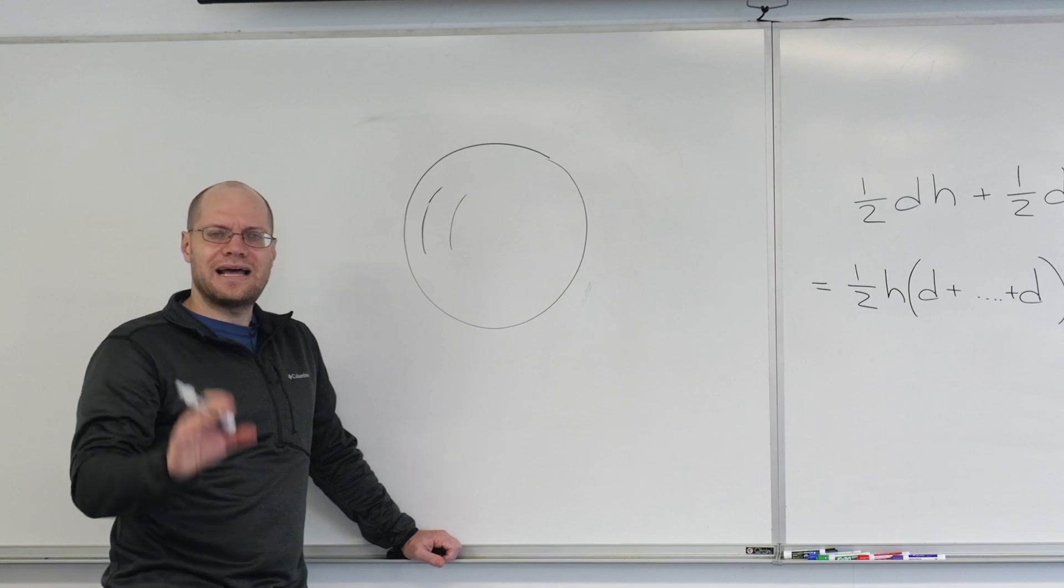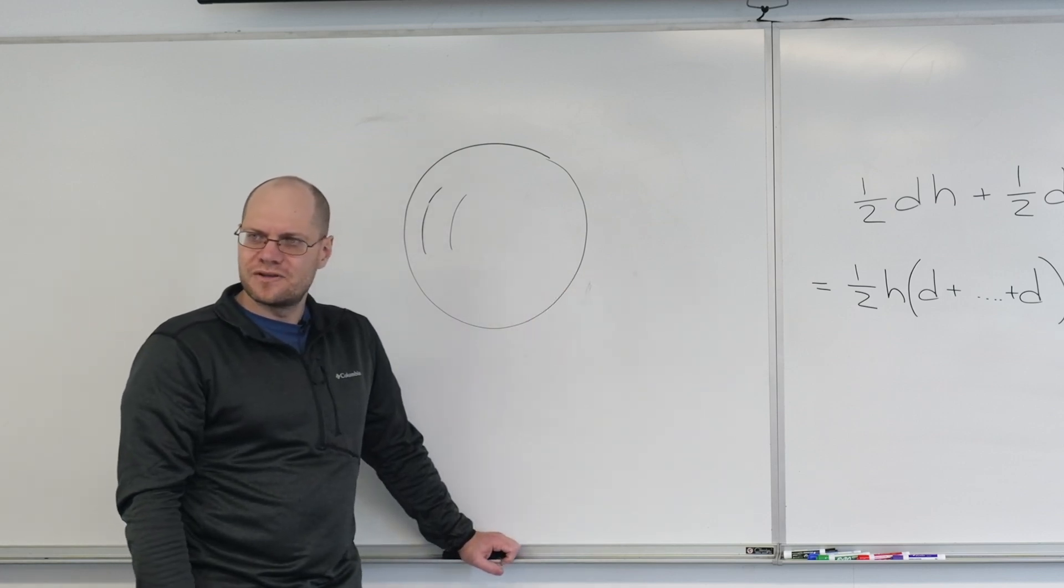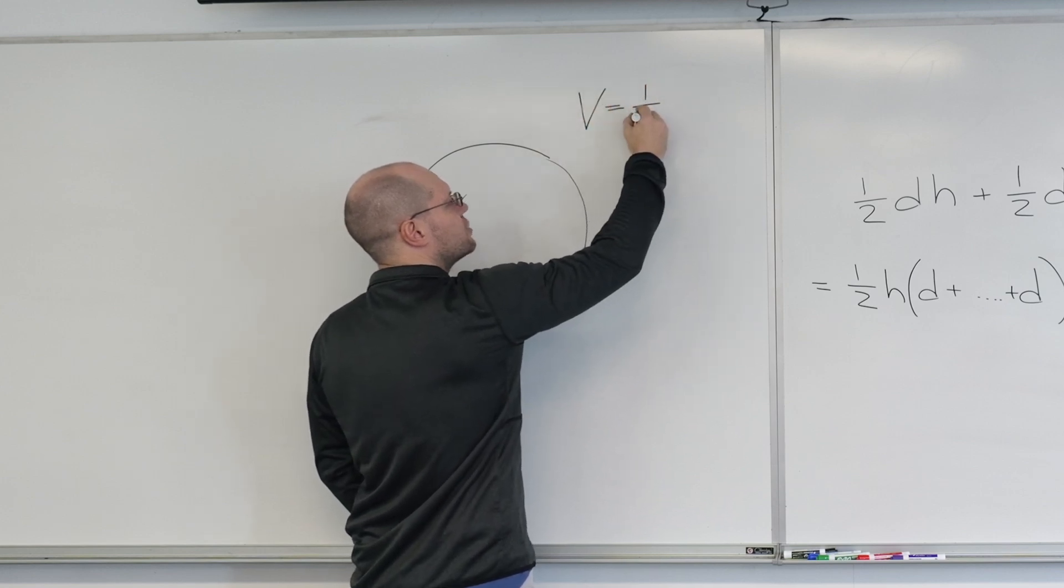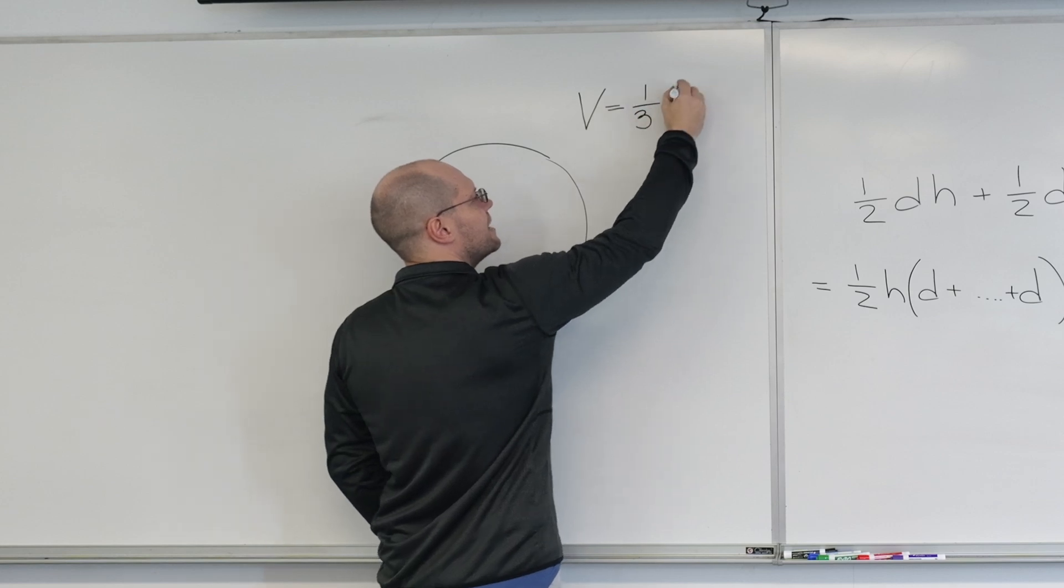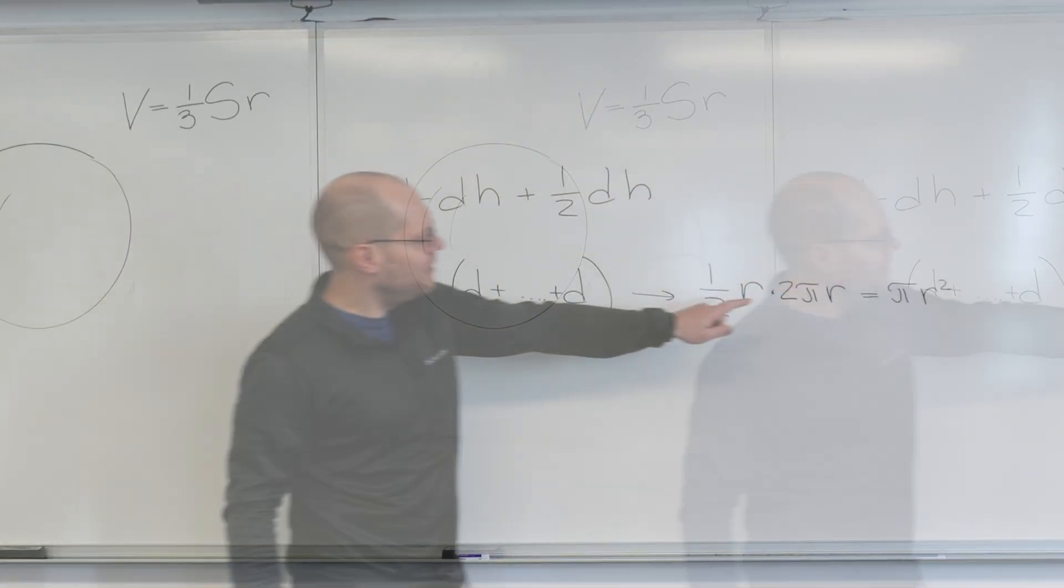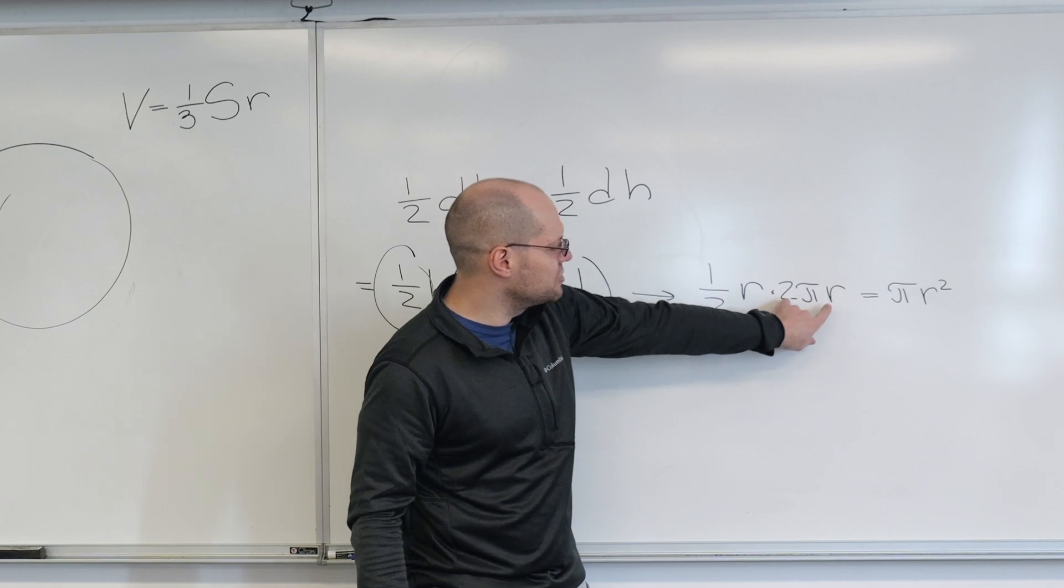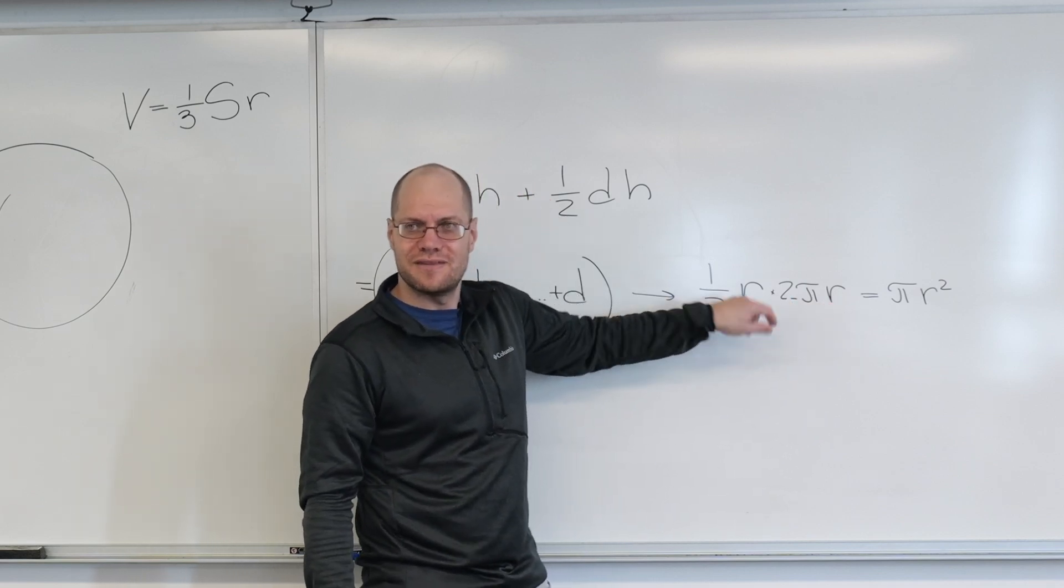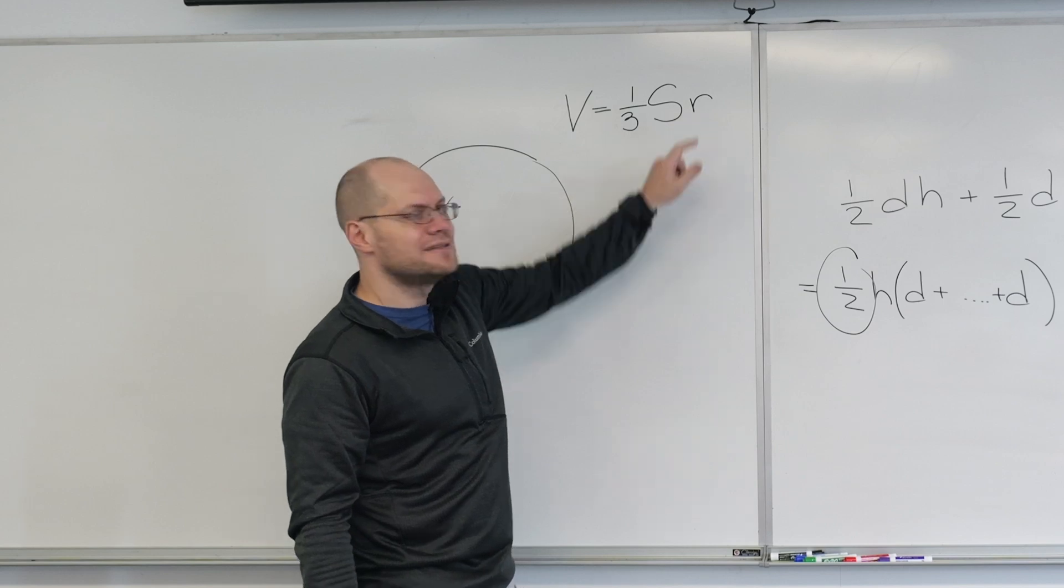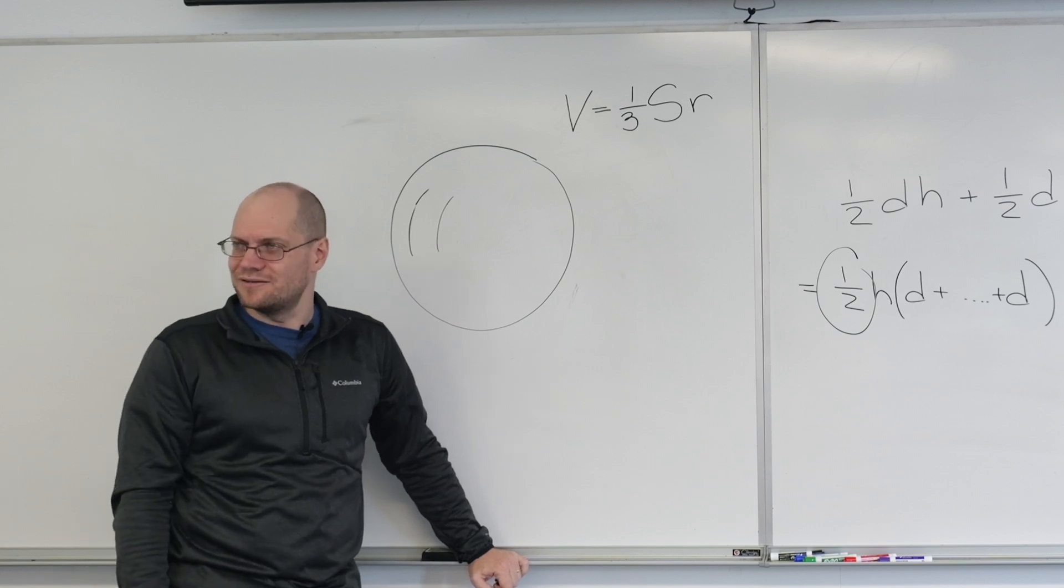Your homework assignment will be to use the same argument to prove that the volume has to be one-third times the surface area times the radius. Like here it was area is one-half times the circumference times the radius. This is analogous: volume is one-third of surface area times the radius. You will prove it by a similar argument with pyramids instead of triangles.